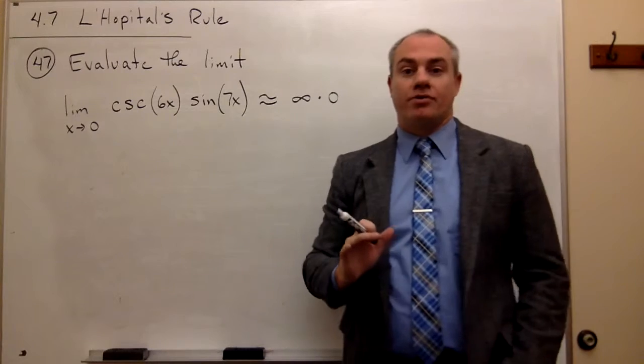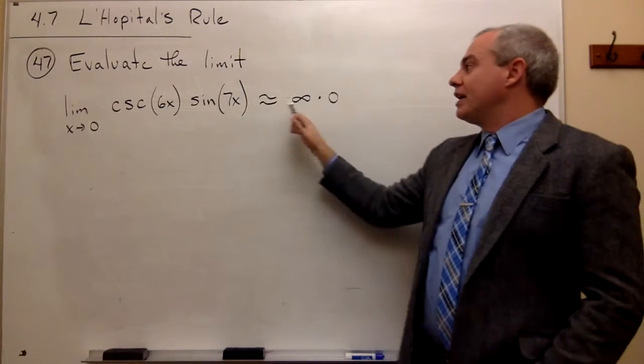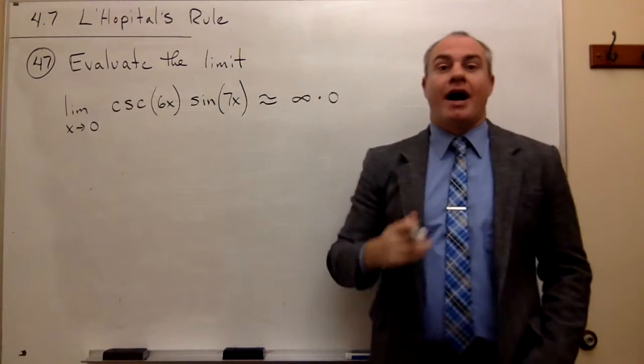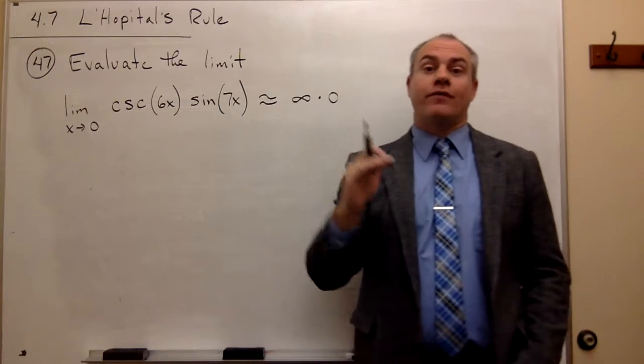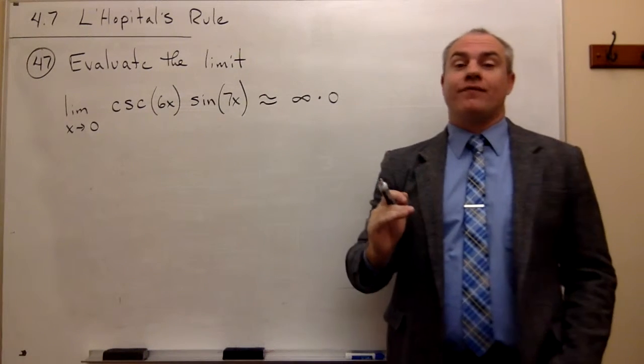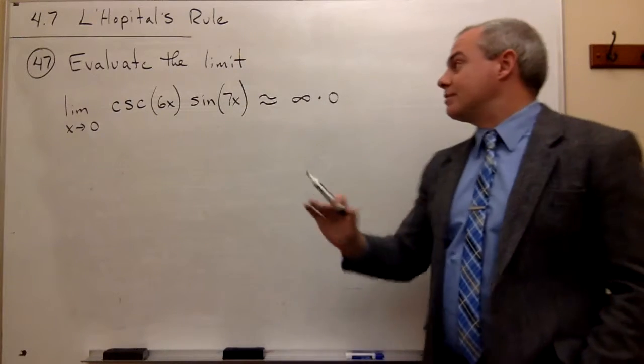I cannot use L'Hopital's rule if the form is infinity times 0. I have to change it in some way so that I either have 0 over 0 or infinity over infinity. One of those two has to be the case.